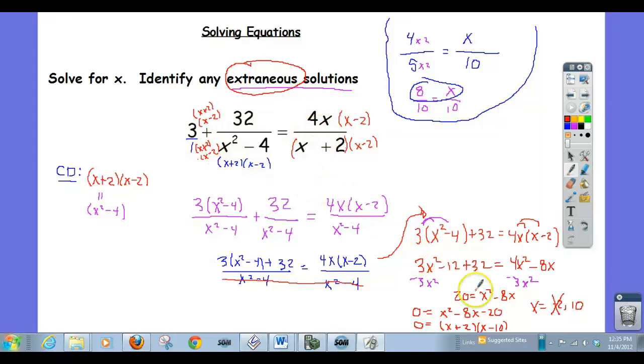They can't intersect at x equals negative 2 because the right-hand side is not defined at x equals negative 2. They can't intersect where a function, they can't intersect if one of them isn't defined there. It turns out this one isn't defined there either. So that means 10 is our only solution.